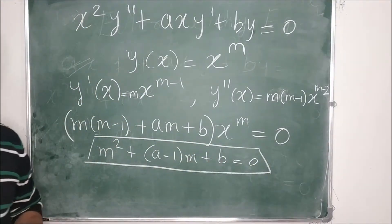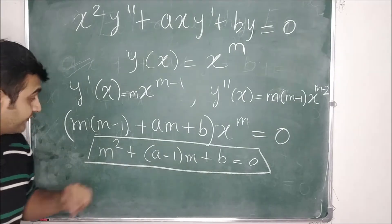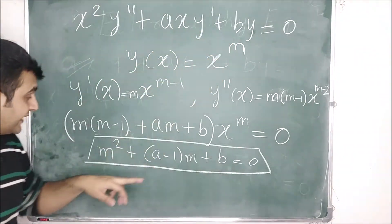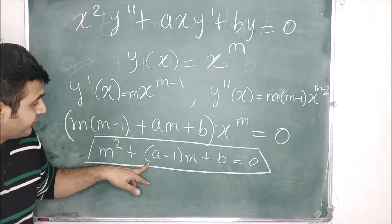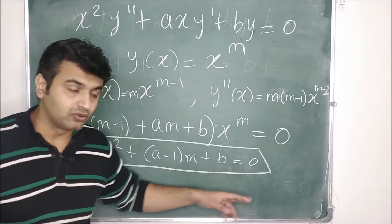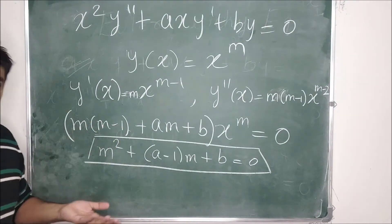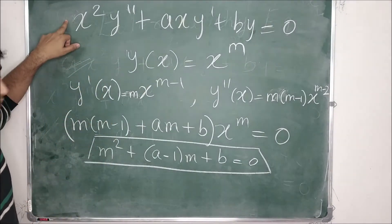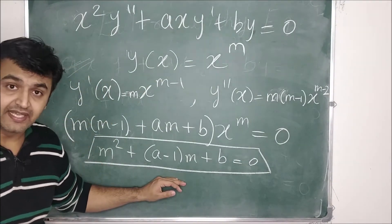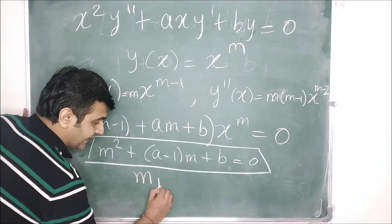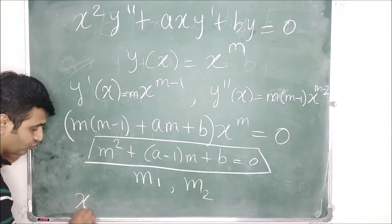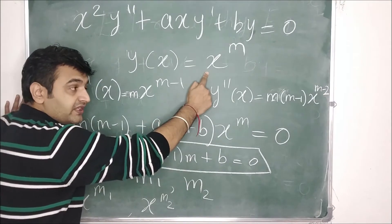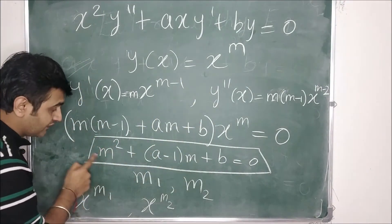This gives the auxiliary equation: m² + (a−1)m + b = 0, which is called the auxiliary equation for the Euler-Cauchy differential equation. If instead you had ax²y'' + bxy' + cy = 0, the auxiliary equation would be am² + (b−a)m + c = 0. Since this is a quadratic, we get two roots m₁ and m₂, giving two solutions x^(m₁) and x^(m₂).